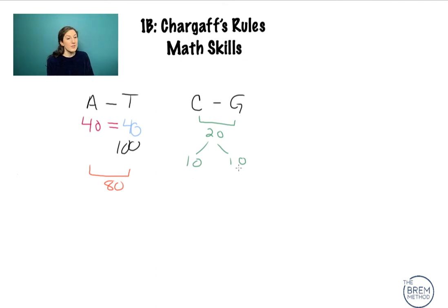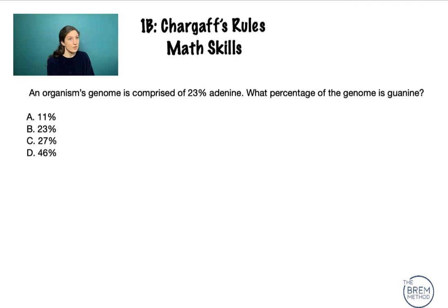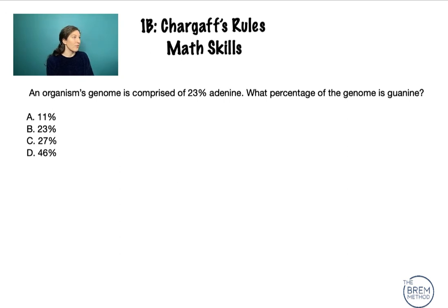Now let's look at a classic MCAT-style discrete problem: an organism's genome is comprised of 23% adenine. What percentage of the genome is guanine? Pause the video, take a second and try to figure this out based on the rules we just talked about, and then I'll go through how to make sure your math is correct on test day.